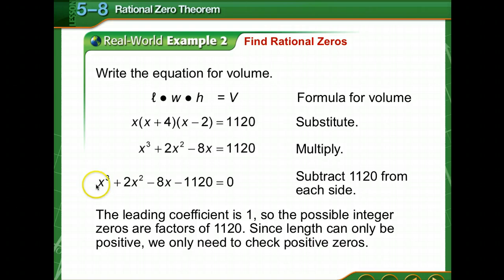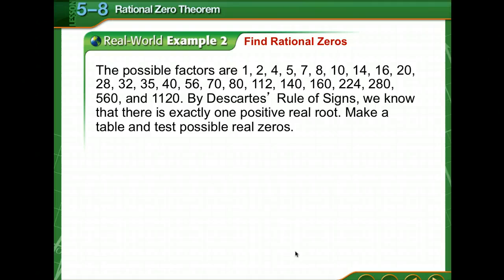The leading coefficient is 1, so all of the possible integer zeros are factors of 1,120. Now the length can only be positive. Remember, we don't sleep on the negative length of a bed. So we're only going to check the positive zeros. These are the possible positive factors of 1,120.